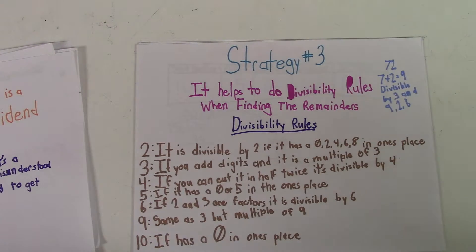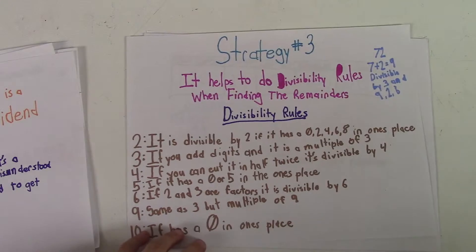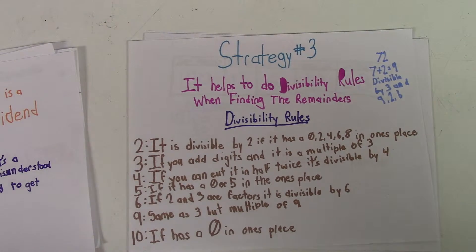The last strategy is it helps to use divisibility rules when finding the remainders. You can look over this list of the divisibility rules. And after you've looked over them, here is an example.